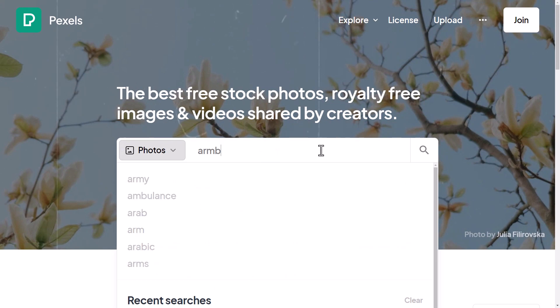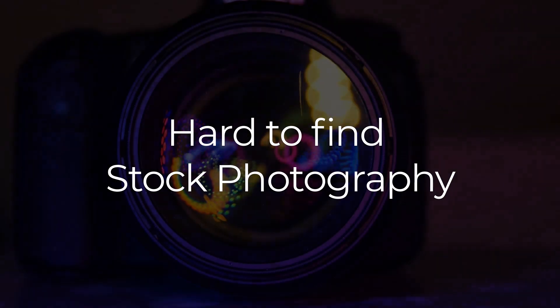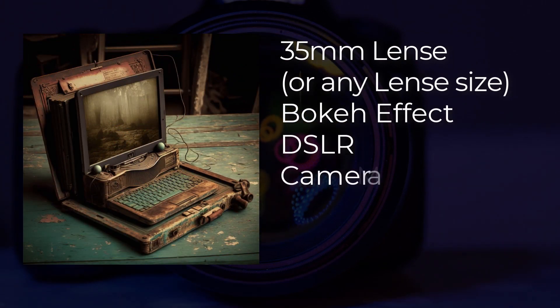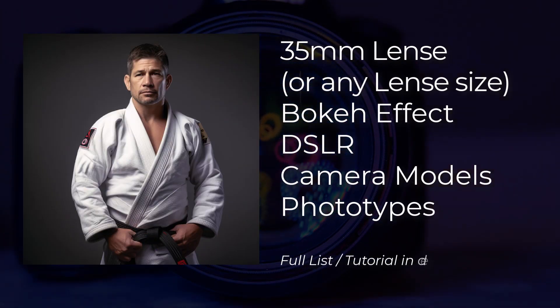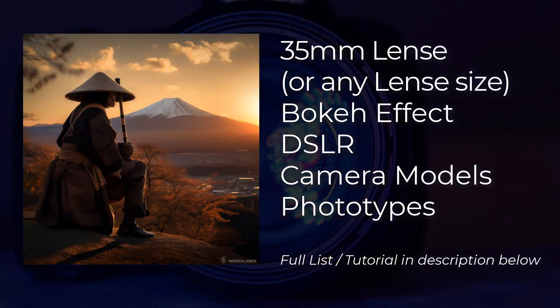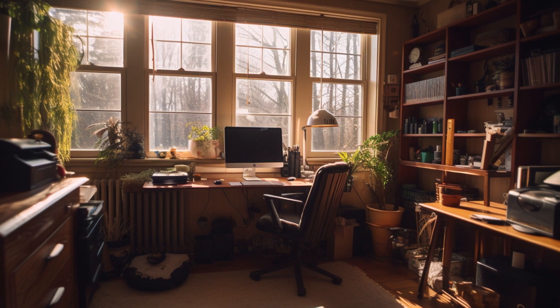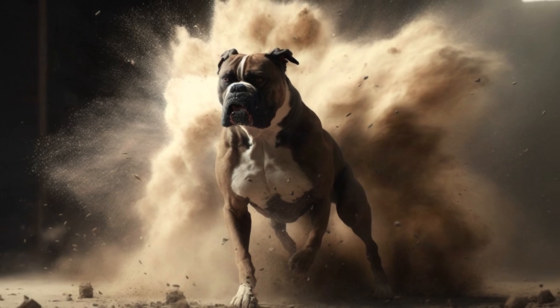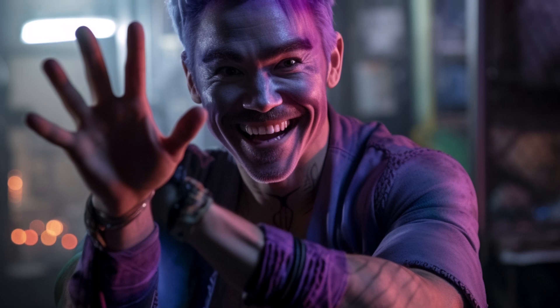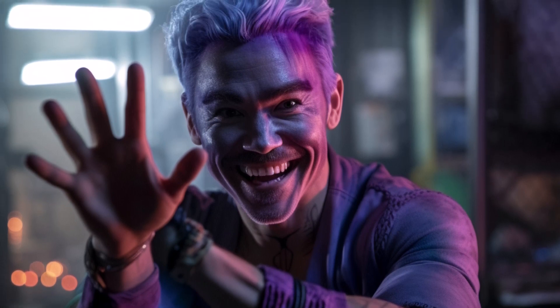Even if you don't need something strange, sometimes you just need a good stock photo and you can't find it. Using AI and adding in a few things such as '35mm lens', 'bokeh effect', and other words that make your images look more photorealistic, you can actually create images that you simply can't find on stock photo sites. Just remember that you can't copyright-protect any of the images you create with AI, but you can still use them as you would if downloading something from Pexels or Unsplash.